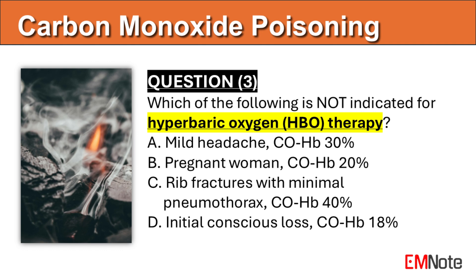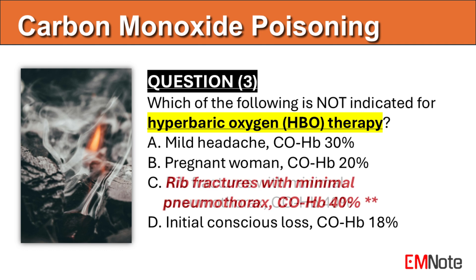Question 3: Which of the following is not indicated for hyperbaric oxygen therapy? The correct answer is C. Untreated pneumothorax is an absolute contraindication for hyperbaric oxygen therapy.